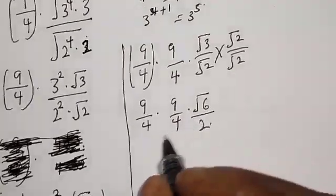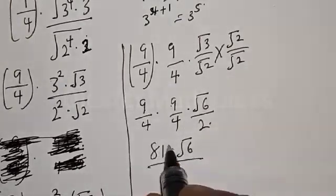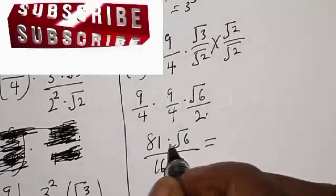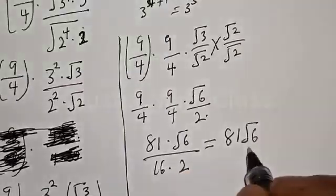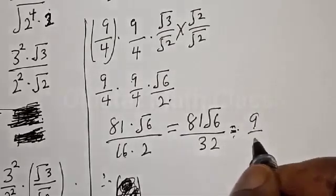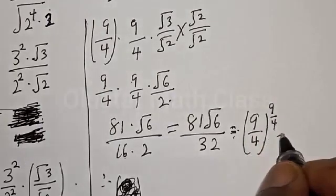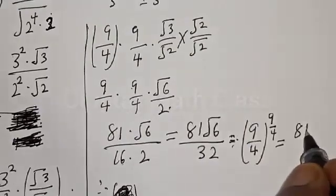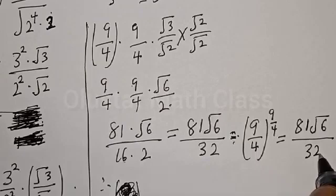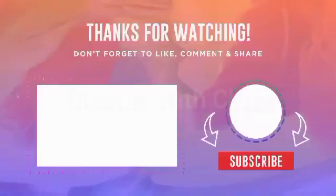When rationalized, root 3 times root 2 gives root 6, divided by root 2 times root 2 which is 2. Therefore we have 9 times 9, that is 81, multiplied by root 6, over 4 times 4 times 2, which is 32. Our final answer is: 9 divided by 4, raised to the power of 9 divided by 4, is equal to 81 root 6 over 32.